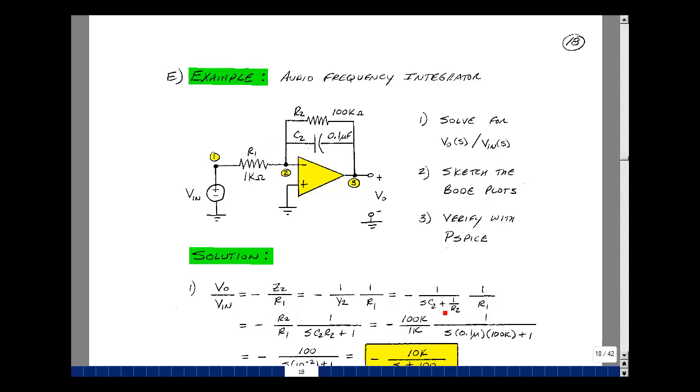Parallel combination would be SC2 plus 1 over R2, and then we have just a 1 over R1. Let's multiply the numerator denominator by R2. It gives me an R2, SC2R2, and then plus 1. I'll bring that R1 over here. R2 was 100k, R1 was 1k. C2 was 0.1 microfarad. R2 was equal to 100k. And so we've got our transfer function in S.